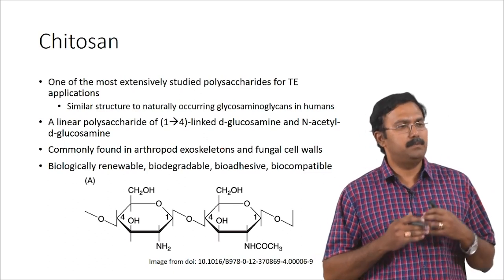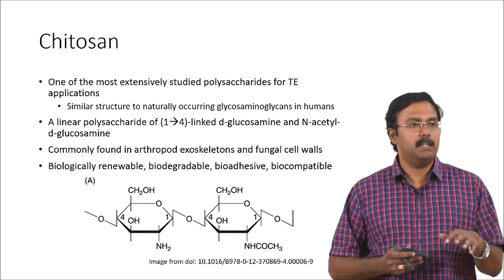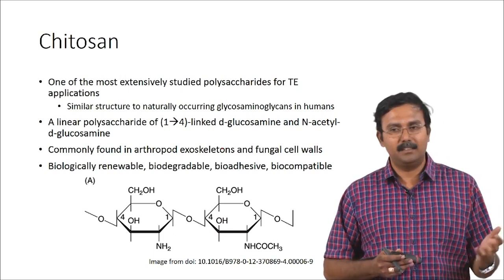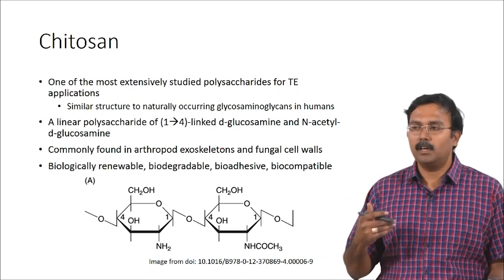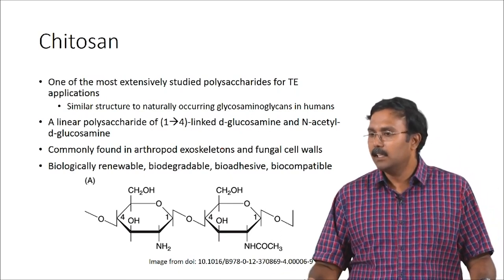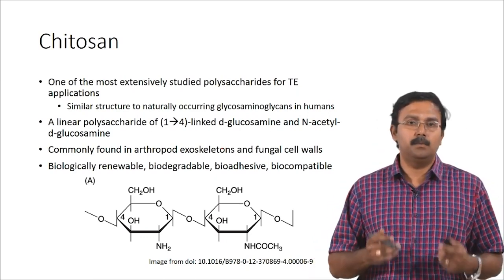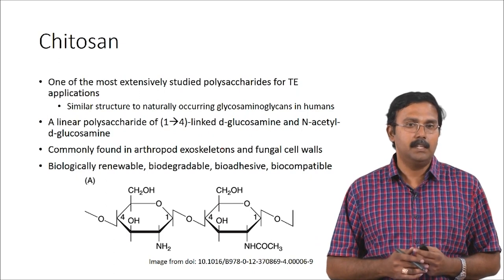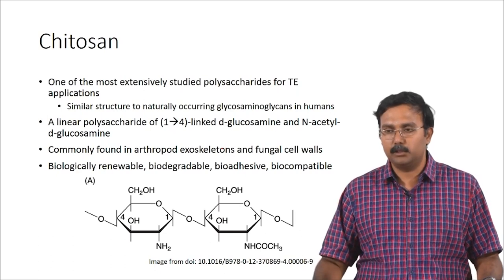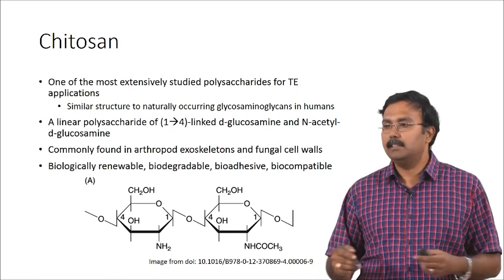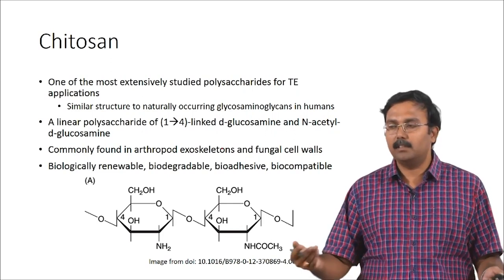Another polymer which is very commonly studied is chitosan. Just behind collagen, chitosan is the highest researched material — if you search for publications related to chitosan in tissue engineering you would find thousands of them. There are actually many studies which have worked extensively on chitosan simply because it has a very similar structure to naturally occurring glycosaminoglycans in humans, and it is a lot easier to get compared to other polysaccharides which are not readily available.